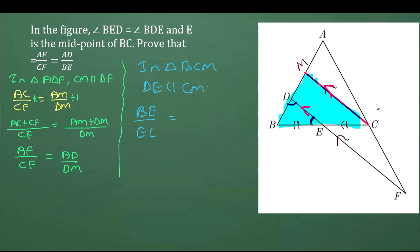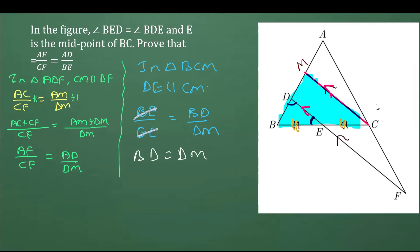We know that BE is equal to EC, so the ratio BE over EC is one over one. By cross multiplication, BD is equal to DM.